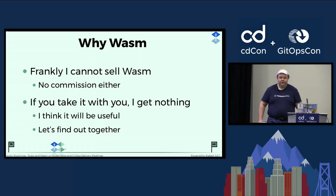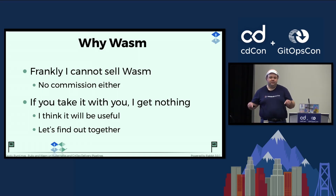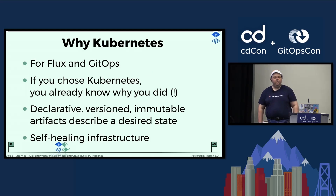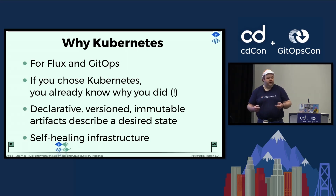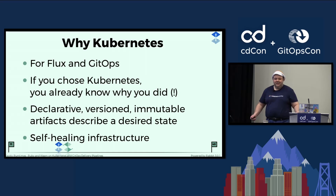I think these are the reasons to use Wasm: it is a secure foundation that you can build on, you can build portable artifacts, and you can have a degree of language independence — though we'll see how that's limited, especially from Ruby's perspective. I cannot sell you on Wasm, so if you don't know why you want it, you'll have to go to another talk. Why Kubernetes? Well, for Flux and GitOps, those are the reasons for me. If you chose Kubernetes, you already know why you did it — it is not a simple choice. But there are declarative, versioned, and immutable artifacts that describe a desired state, and self-healing infrastructure — that's the reason why.